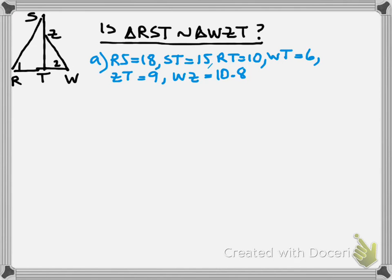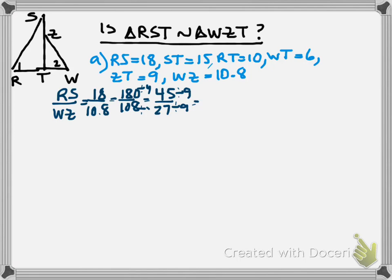So let's go ahead and investigate. We're going to start with RS over WZ. RS is 18, WZ is 10.8. If I multiply top and bottom by 100 I get 180 over 108. Both of those are divisible by 4. I'm going to simplify and I get 45 over 27, and then I see that they have a 9 in common. So this gives me 5 over 3. That's what we have to work with initially.